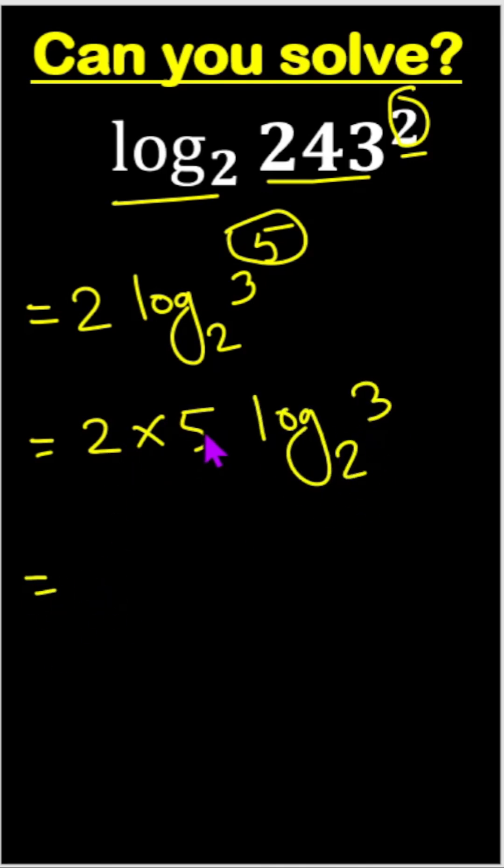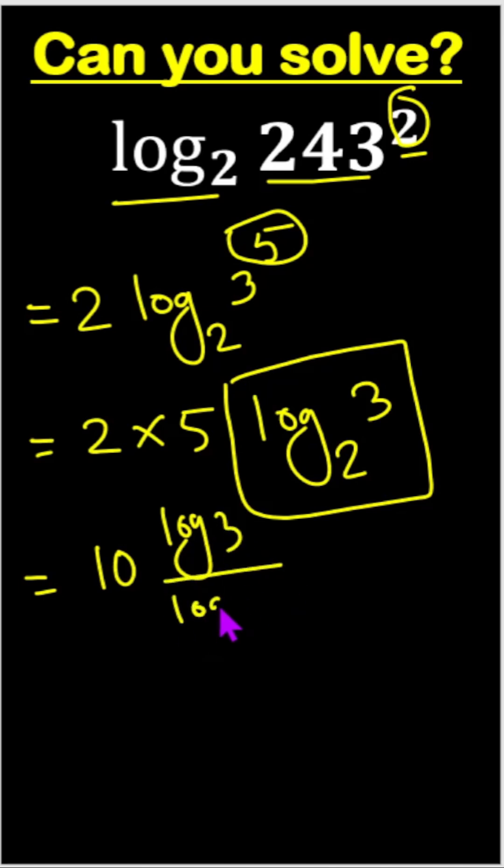Now, 2 times 5 is 10. Then, this one, we can write log 3 divide log 2, right.